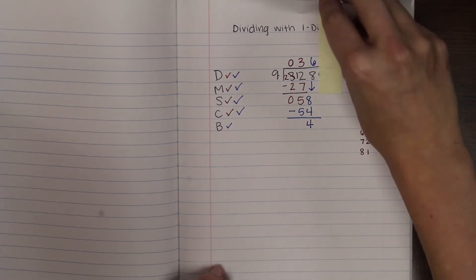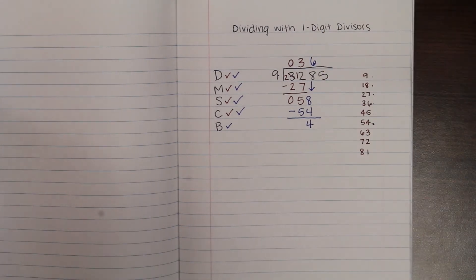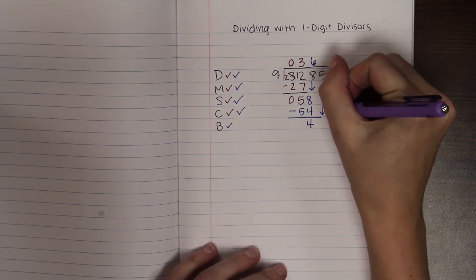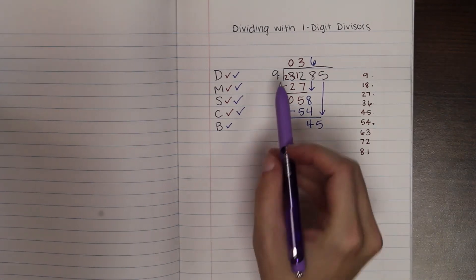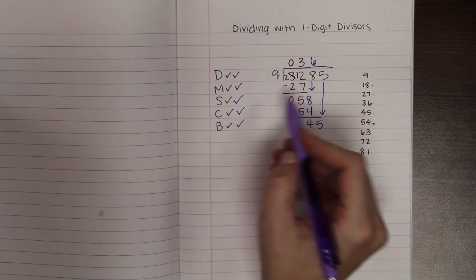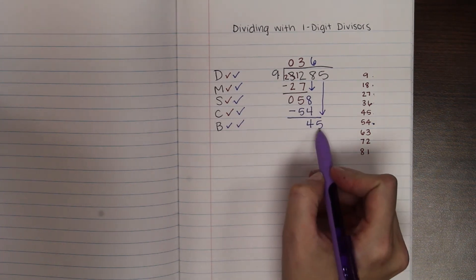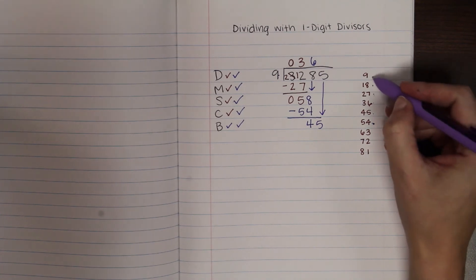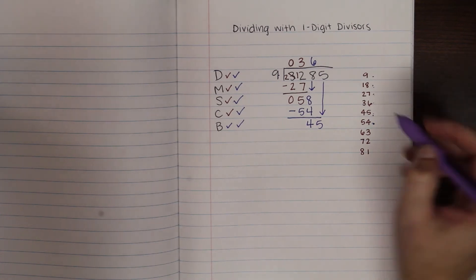And then we're going to bring down our last digit, 5. All right. We're going to do this one more time. How many times will 9 go into 45? Oh, look. It's right there. Nice. Goes in 1, 2, 3, 4, 5 times.